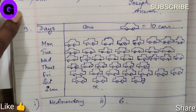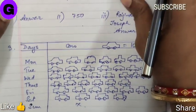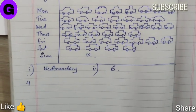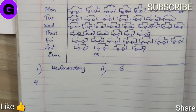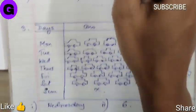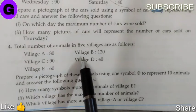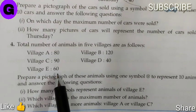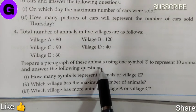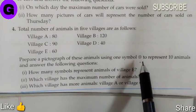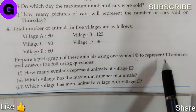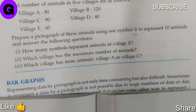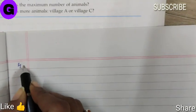Now question number 4. We have to draw a pictogram of animals using the symbol given in the book. The total number of animals in five villages are: Village A 80, Village B 120, Village C 90, Village D 40, and Village E 60. One symbol will represent 10 animals. I have to draw the pictogram of the animals.